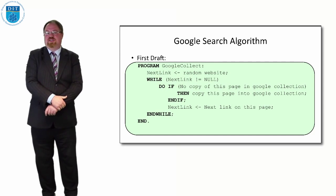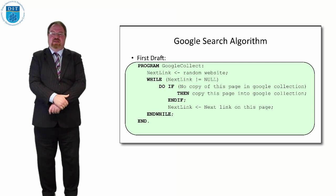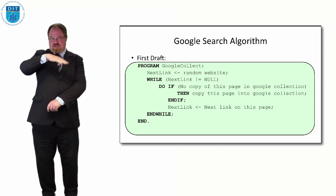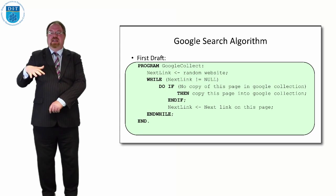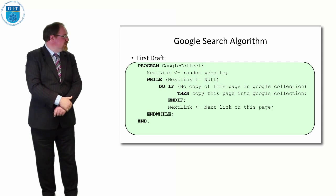So once they've got their Google collection of what pages are currently on the web, that allows them then to do searching locally, because they don't search the whole web live when you do a Google search. What they do is create a local copy and then search that one instead.